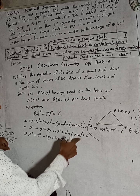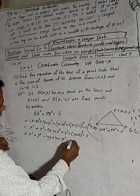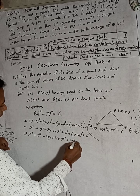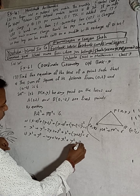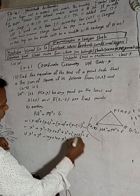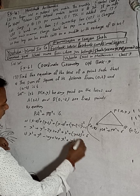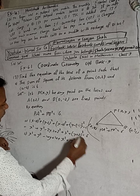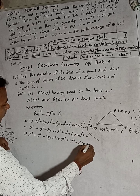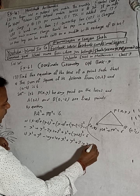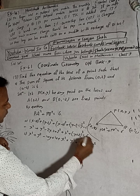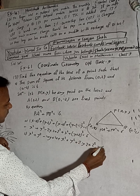Continuing with the PB² expansion: y² + 2 × y × 2 + 2 squared, which is y² + 4y + 4. The total equals 6.